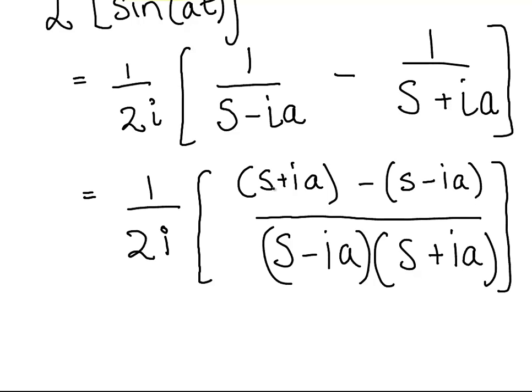The s terms cancel out. s minus s plus ia minus minus ia. That's plus 2ia. Okay, s minus ia times s plus ia. Okay, it's the difference of two squares expression. So that is s squared. Let's go down here a bit more. Let's scroll back up.